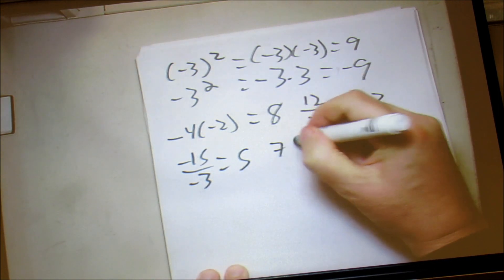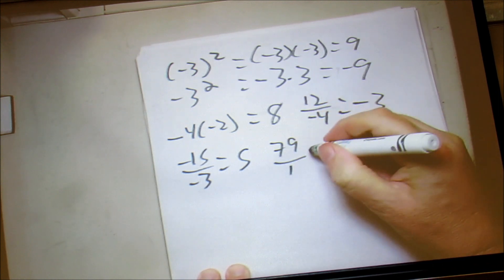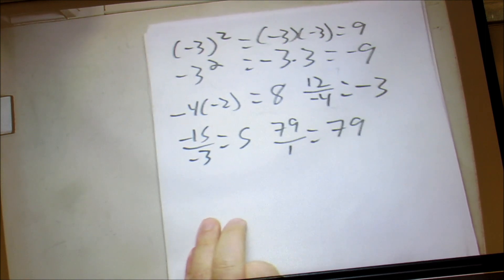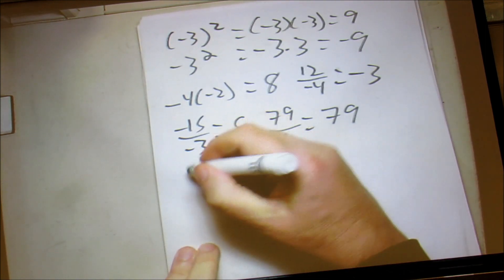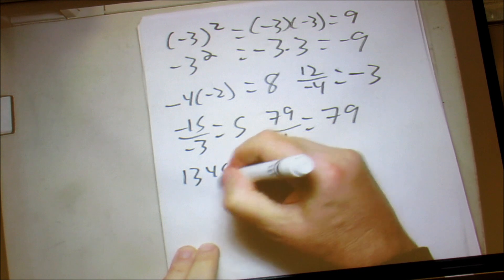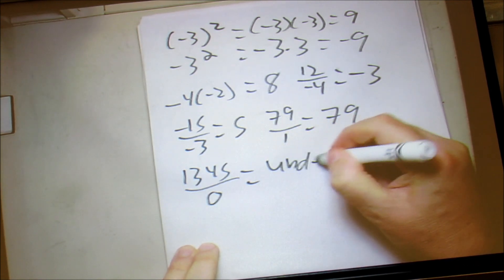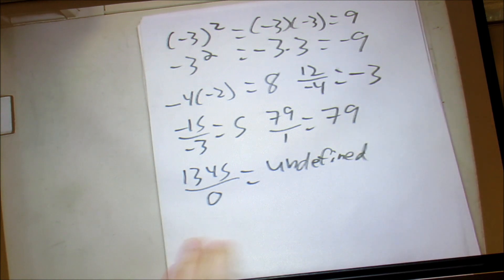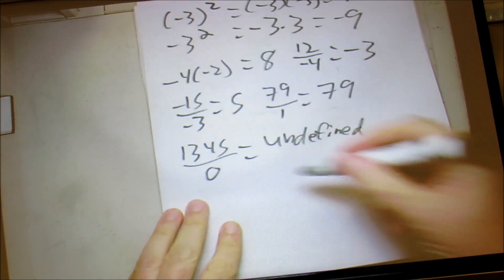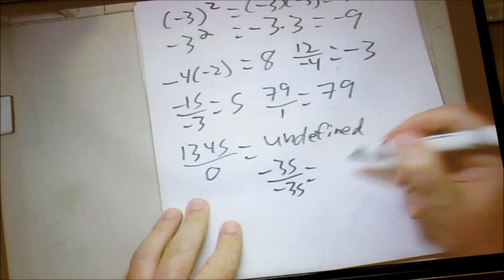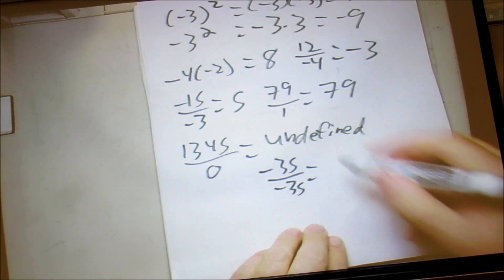If we have any number — say 79 divided by 1 — that equals just that same number, so 79. If we have 1345 over 0, that's undefined. Follow the directions on the test for what to type in if something is undefined. Any number divided by itself — say negative 35 divided by negative 35 — equals 1.